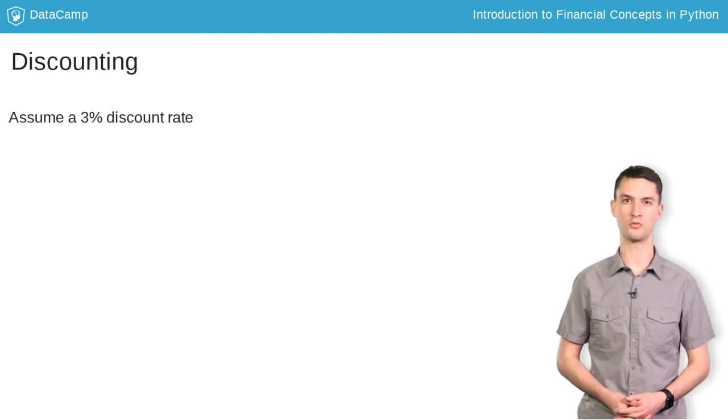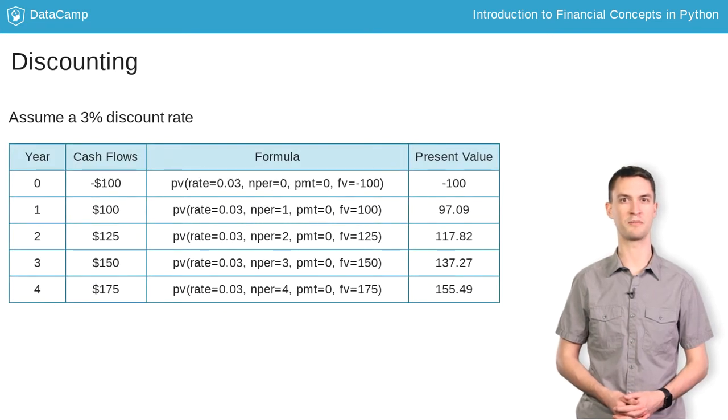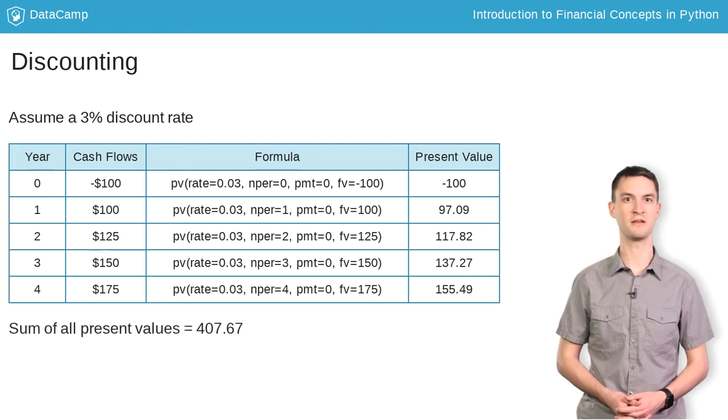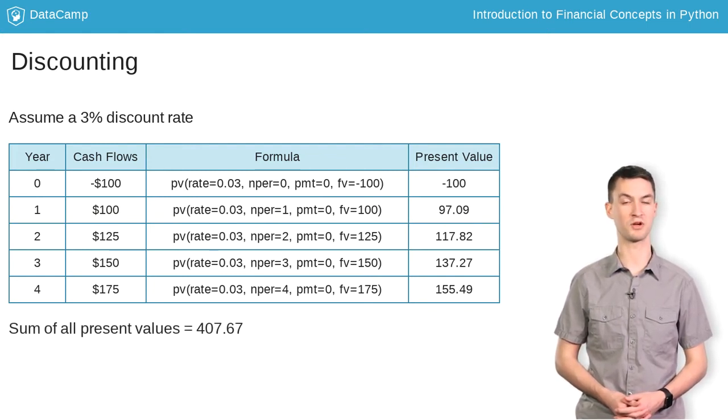So you could do this the hard way, by calculating the present value of each and every payment and discounting it by the proper period, sum all of the present values together as shown in this slide, and then repeat the same process over again for the second project.